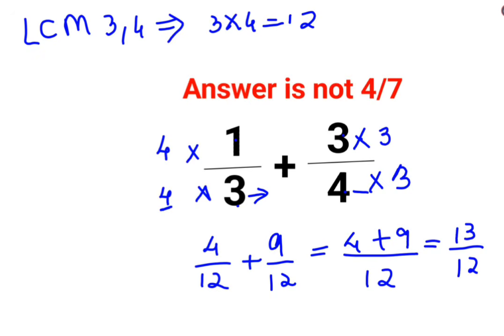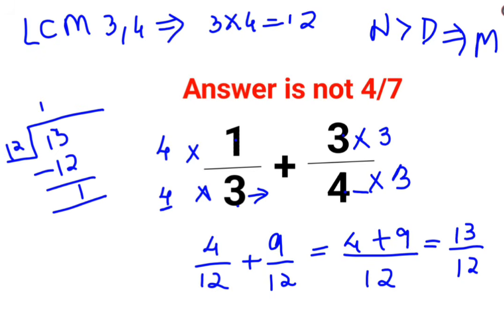This is an improper fraction because the numerator is greater than the denominator. Whenever you have something like this, you will convert it into a mixed fraction. You divide 13 by 12: 12 goes once, subtract, you're left with 1.